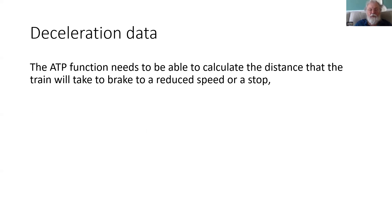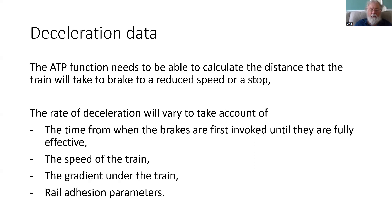At any time the ATP is calculating the distance that the train needs to brake in order to come to a reduced speed or a stop. That rate of deceleration is going to vary - it takes account of the time from when the brakes are first invoked until they're fully effective, which for modern multiple unit trains is near instantaneous but for older trains can be a number of seconds. It also needs to account for the speed of the train, as different brake types are more or less effective at different speeds, the gradient under the train, and railhead contamination affecting adhesion.